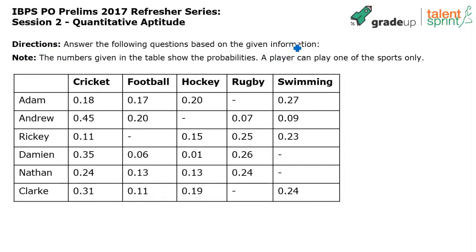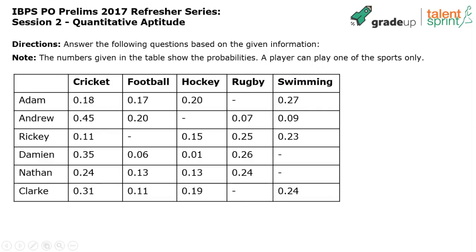The numbers given in the table show the probabilities a player can play one of the sports only. There are different players — Adam, Andrew, Ricky, Damien, Nathan, and Clark — and different sports: cricket, football, hockey, rugby, and swimming. A player can play only one sport, so Adam can either play cricket, football, hockey, rugby, or swimming.